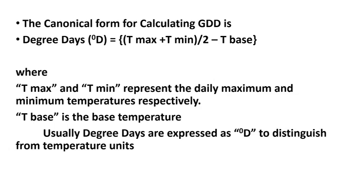The canonical form for calculating GDD, expressed in units of degree-days (°D), is: T_max plus T_min divided by 2, every day from day 0 to day 35. Each day, maximum and minimum temperature are averaged, and the base temperature is deducted from that mean. Here, T_max and T_min represent the daily maximum and minimum temperatures, and T_base is the base temperature.